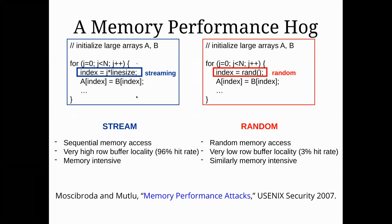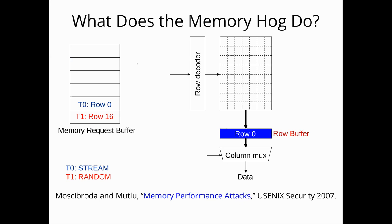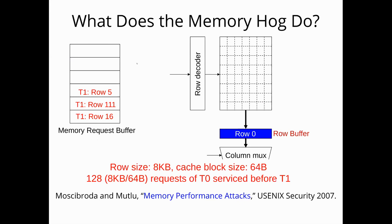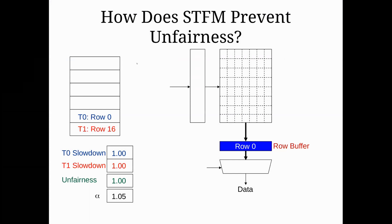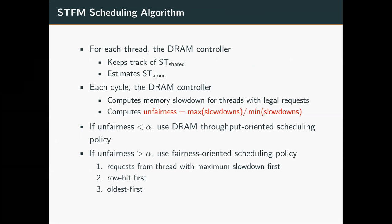We had the streaming program up here that just had a bunch of sequential reads, while the random program had a bunch of random memory accesses which aren't going to induce very many row buffer hits. So what happens is that our streaming program gets priority — it takes all of the bandwidth. We saw an animation and then discussed this concept of unfairness and tried to minimize it using a new scheduling algorithm that takes unfairness into account.